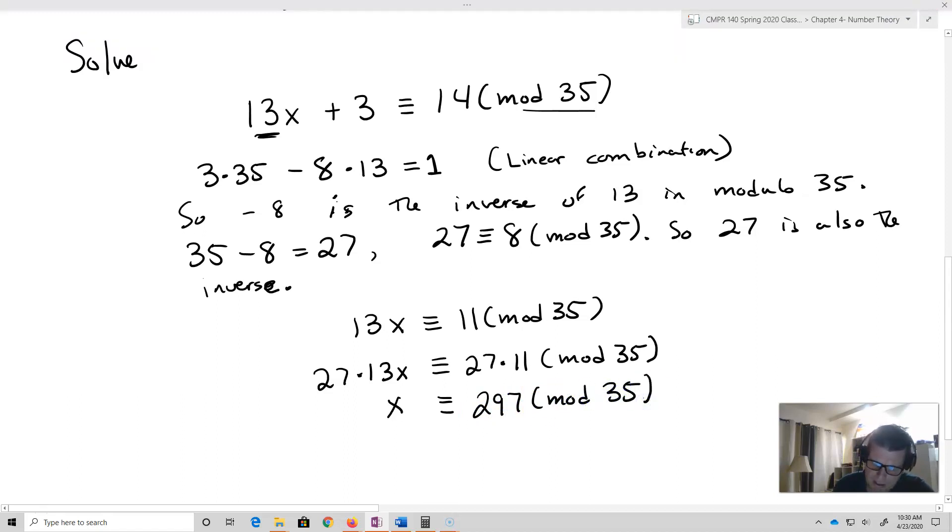This means that x is then going to be equivalent to 297 modulo 35. Okay. And now we've just got to figure out what 297 is modulo 35. So I'm going to take 297. That's going to equal 8 times 35 plus 17. So x equals 17.